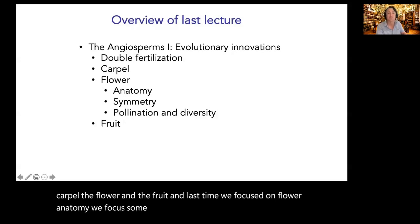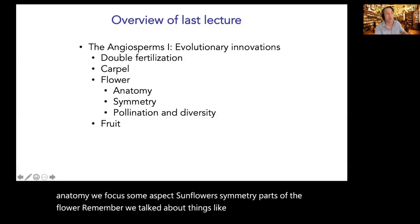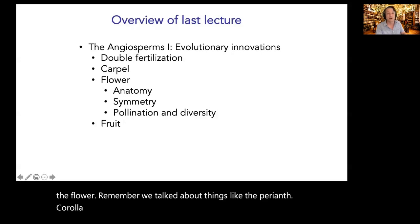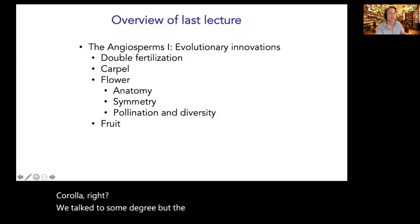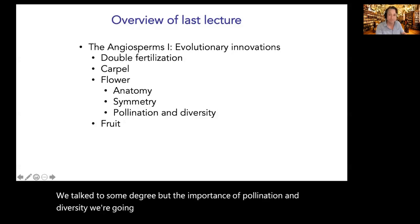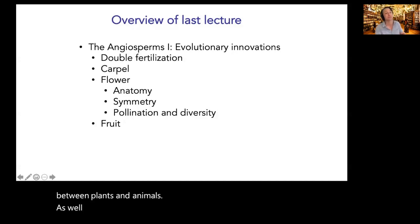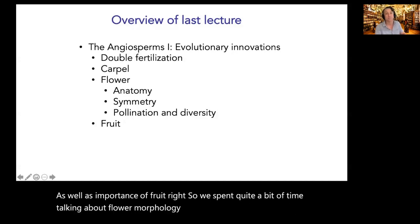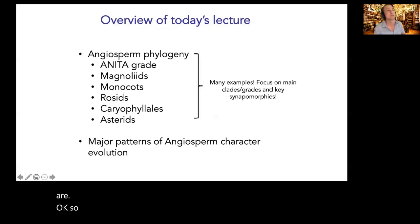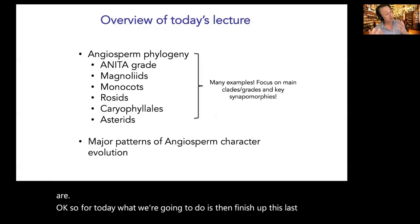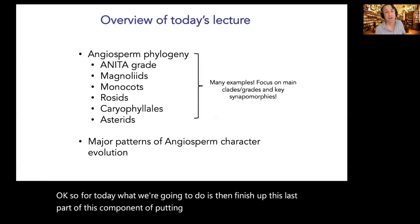We talked about the importance of pollination and diversity, which we'll return to when discussing co-evolutionary relationships between plants and animals, as well as the importance of fruit. We spent time on flower morphology and what fruits actually are. For today, we're going to finish up this component by putting together the angiosperm backbone phylogeny.